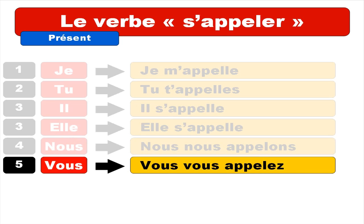Next, it's a bit the same concept — you've got to repeat vous again, and then you get vous vous appelez. Same thing: only one 'l.' Vous vous appelez. Repeat.